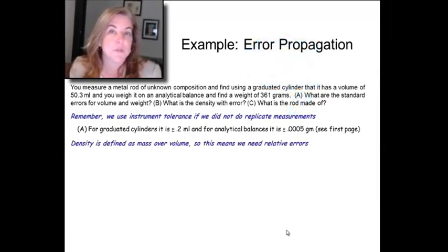Now, density is defined as mass over volume, so this is going to be a multiplication division type of operation. So, we are going to square the errors, add them together, and take the square root, but we have to be working with relative errors. So, we need to convert our absolute errors that we get from tolerance to relative errors. So, let's do that now.